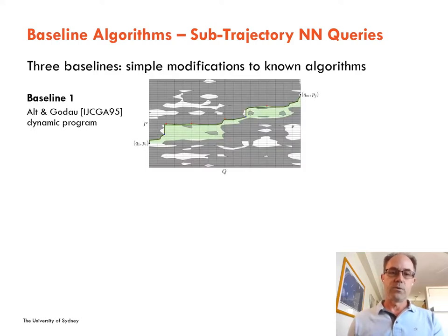The baseline one algorithm is a straightforward modification of Alt and Godau's classic algorithm that creates a free space diagram and searches white space using a dynamic program. They show that if you can construct a monotone path in the free space between trajectories P and Q, then they are at most a leash length distance apart.